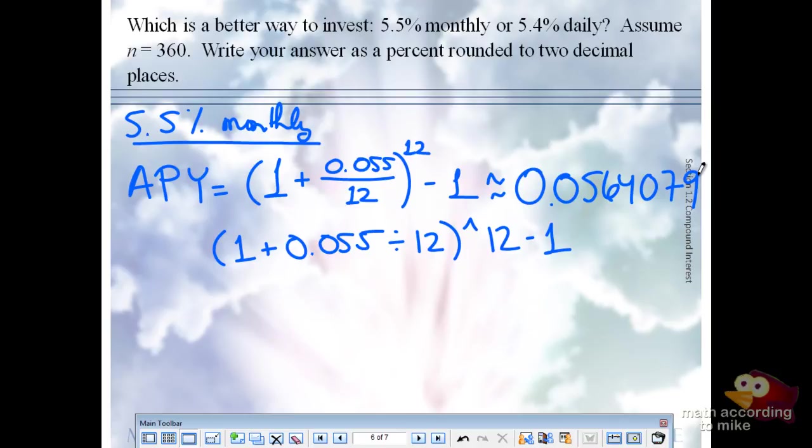All right. This is a decimal. The corresponding percent would move two places to the right. But then we're going to take that percentage and round it to two decimal places. So what's our final answer for this one? 5.64%.